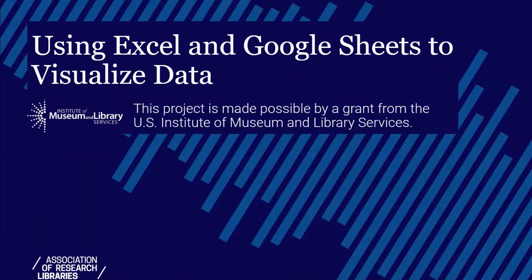Welcome to Using Excel and Google Sheets to Analyze Data, part of the Research and Assessment Cycle Toolkit Project offered by the Association of Research Libraries and made possible by a grant from the U.S. Institute of Museum and Library Services. This presentation is part of a module that focuses on organizing and analyzing data and includes both descriptions and demonstrations of how to use Excel and Google Sheets to visualize your data. We hope the content is useful to library practitioners seeking to conduct assessment projects.